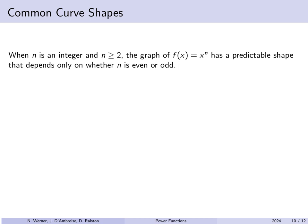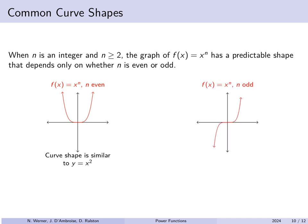Common shapes: when n is even, x^n looks like a parabola — flatter at the bottom and steeper away from it as n grows. When n is odd, x^n looks like x³ — the flat middle region gets flatter and the outer portions steeper as n increases.